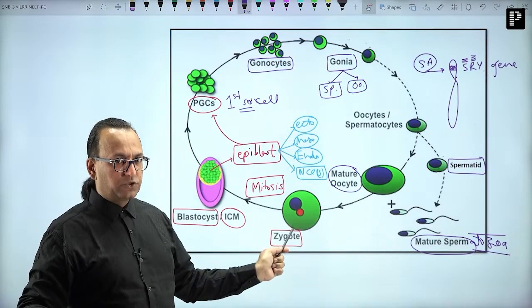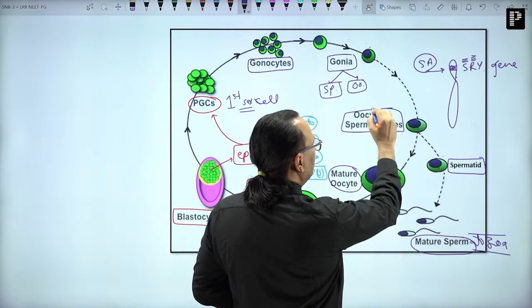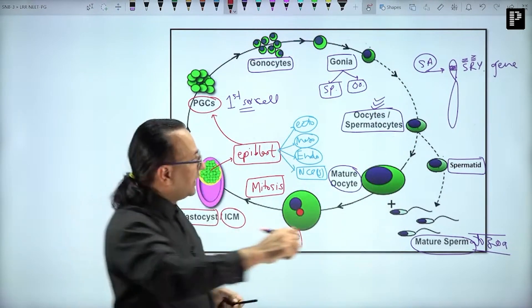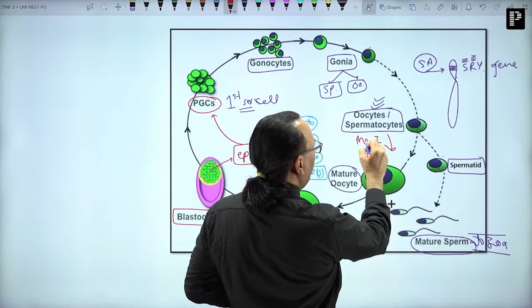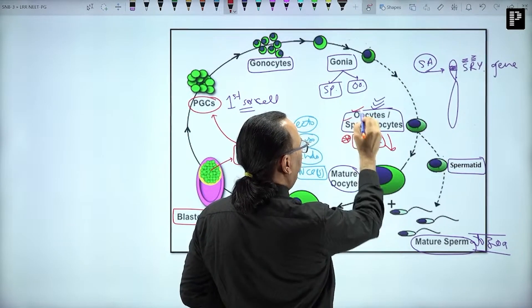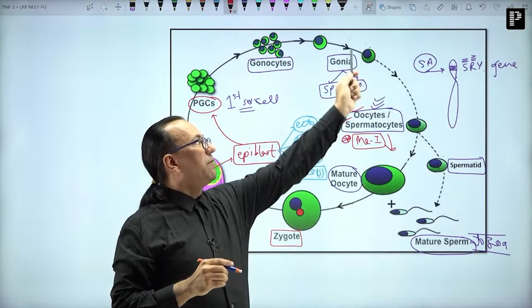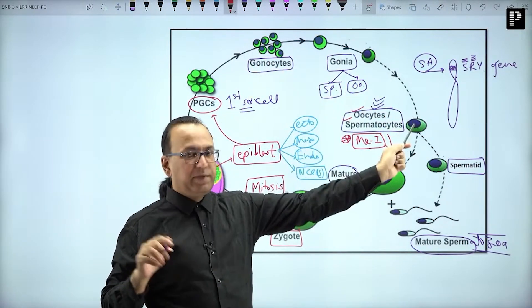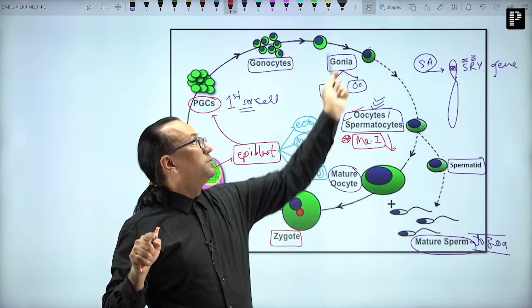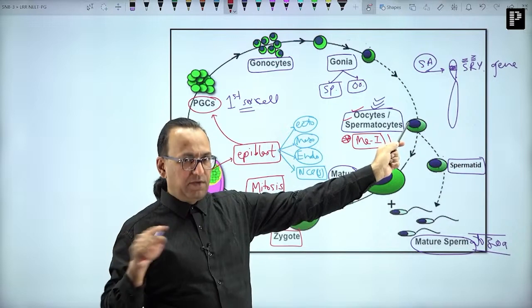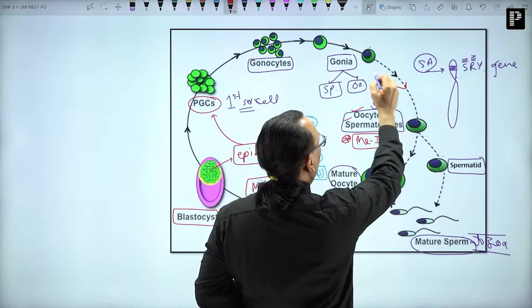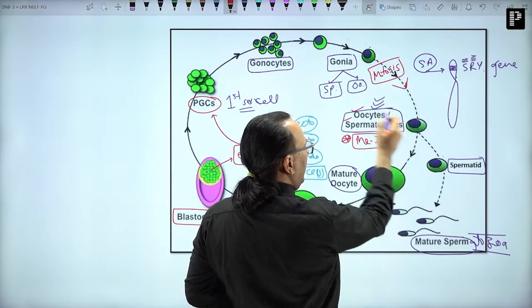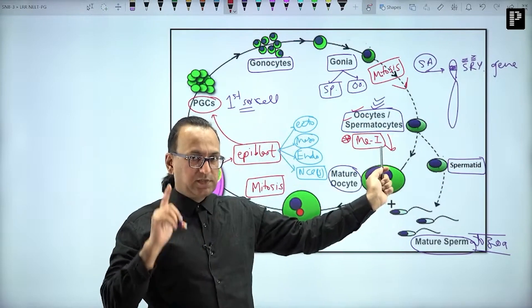Remember it is the primary spermatocyte or primary oocyte which will enter meiosis. Meiosis begins at the level of the primary oocyte or primary spermatocyte, not before that. What is happening before that? All this is mitosis. Question comes: spermatogonium will form the primary spermatocyte by which cell division? You say it is by mitosis. This is mitosis because meiosis begins only after this. It is the primary oocyte or primary spermatocyte which will enter meiosis one.